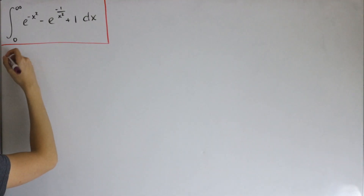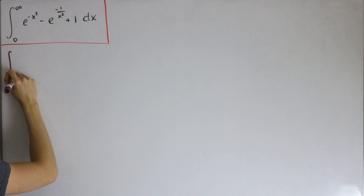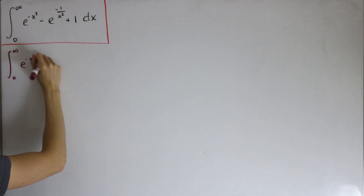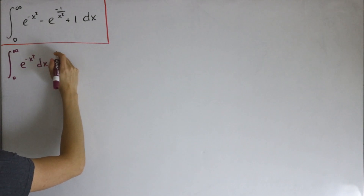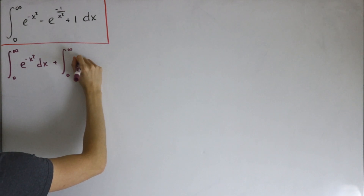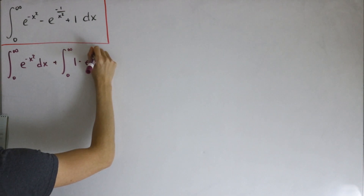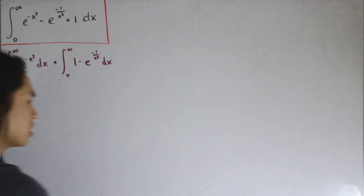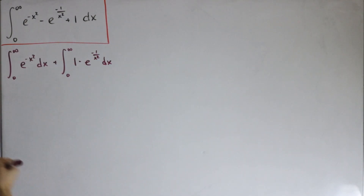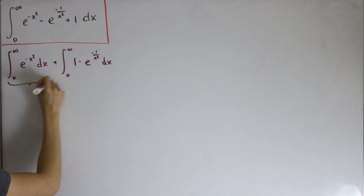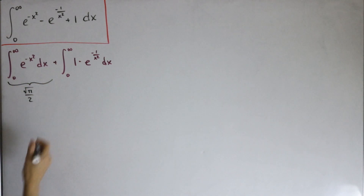As mentioned, if we split this up into a sum of integrals, the first part is the integral from zero to infinity of e to the negative x squared dx. Then we add this with the integral from zero to infinity — moving the one to the front — of one minus e to the negative one divided by x squared, dx. We know the first integral is the Gaussian integral, which evaluates to the square root of pi divided by two.